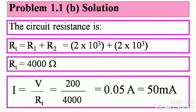Therefore I is equal to V by RT by Ohm's law, which is equal to 200 divided by 4000, equal to 0.05 ampere or 50 milliampere. Remember to write the units for all your problems and their answers.